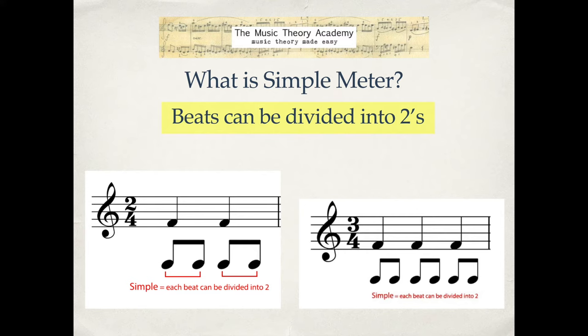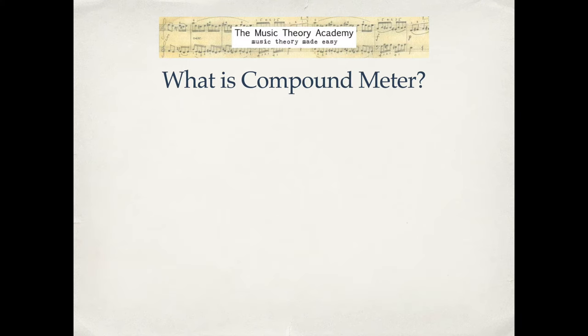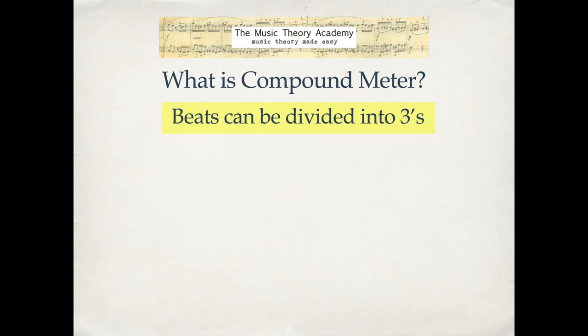Let's look at another example in three-four. Again, we've got crotchet notes — these quarter note beats — and they can be divided into two, so we describe this as simple meter or simple time. The key thing to keep note of is the division of beats, not the number of beats in a bar. It's simple because it's got quarter notes that can be divided into two.